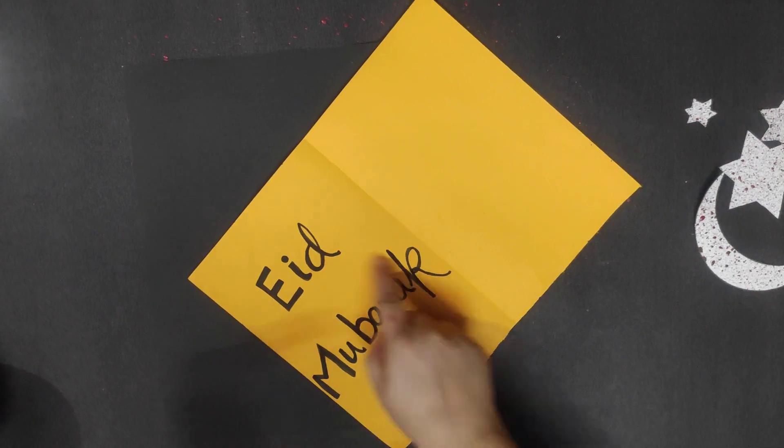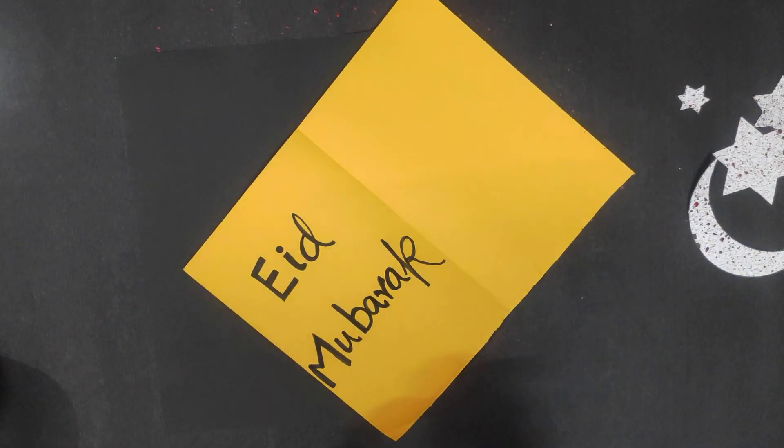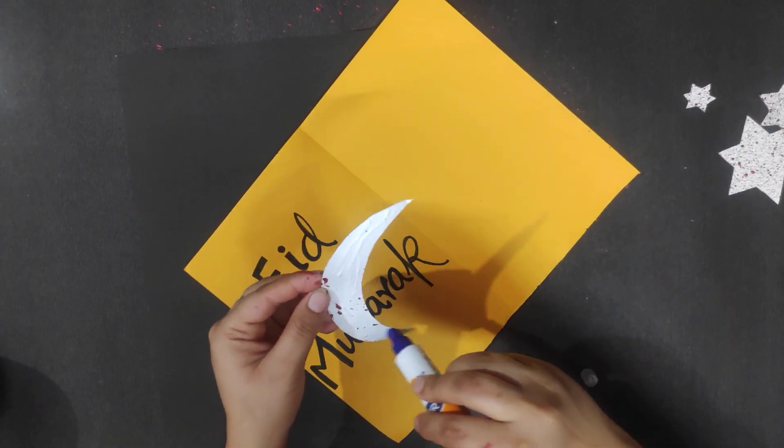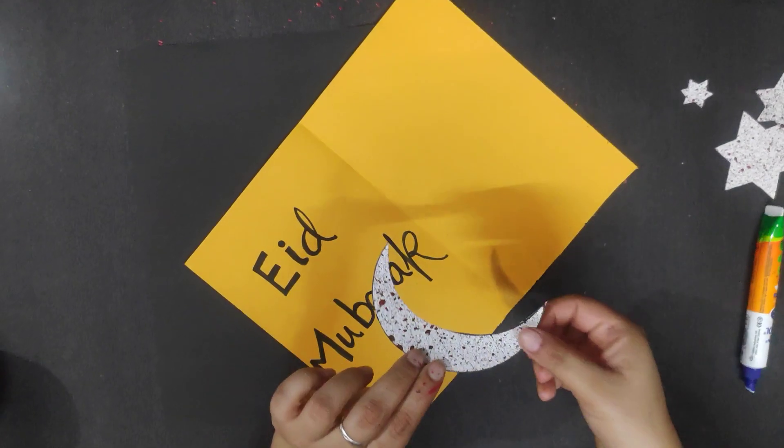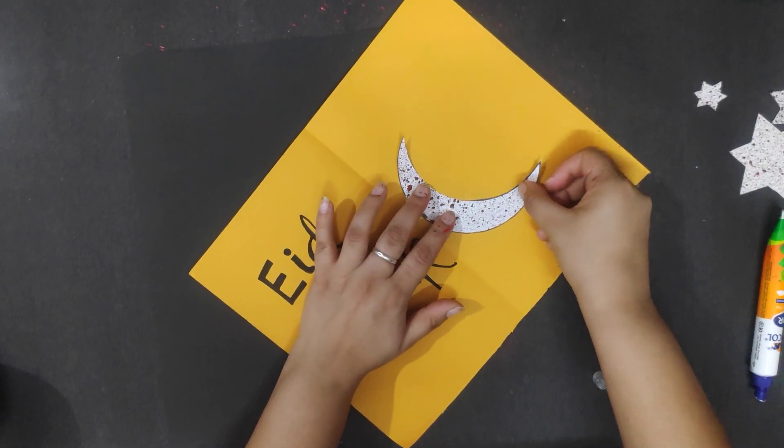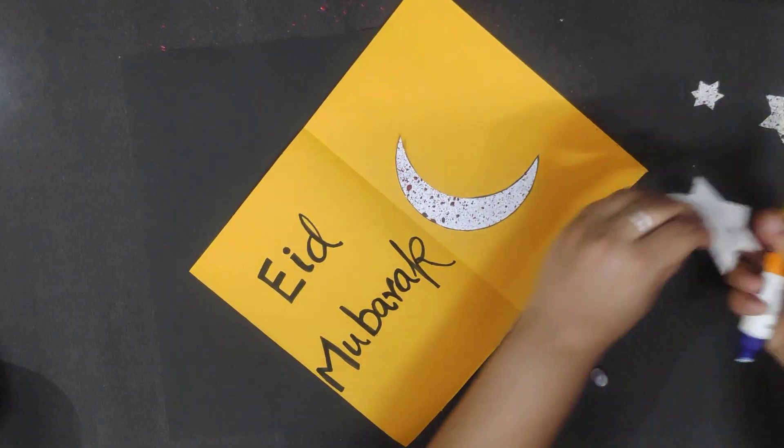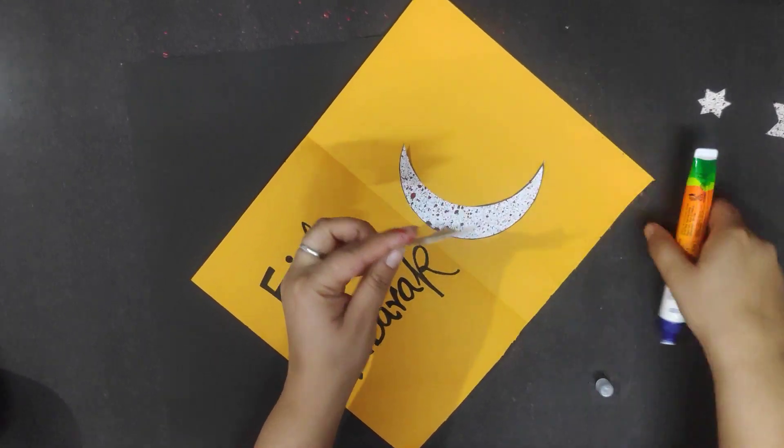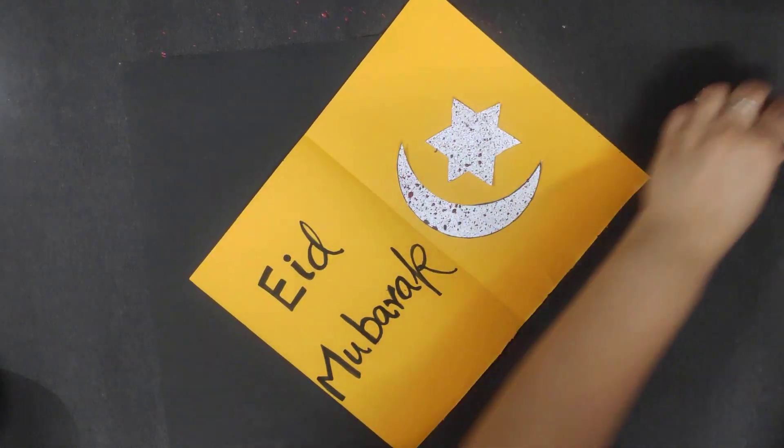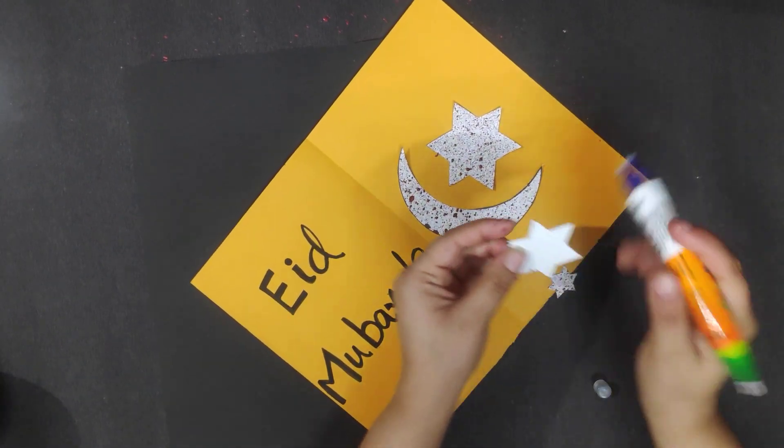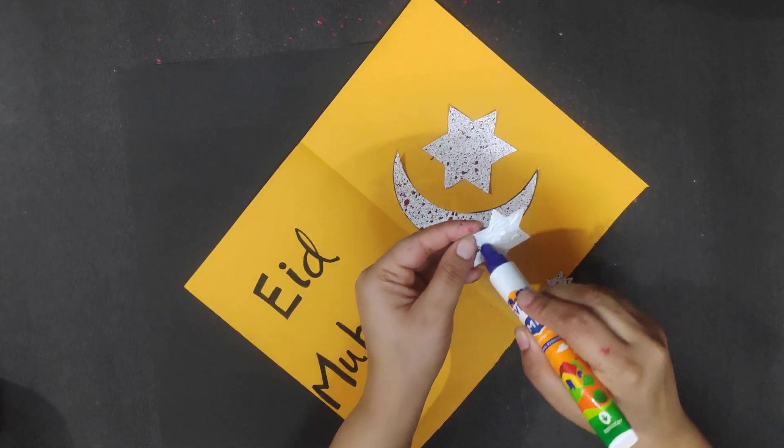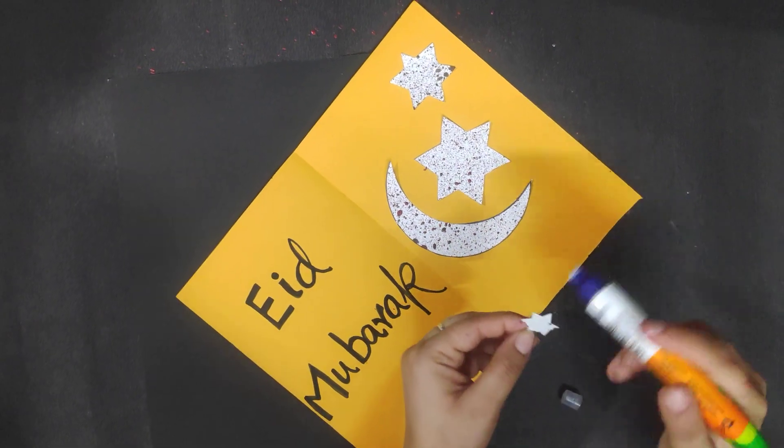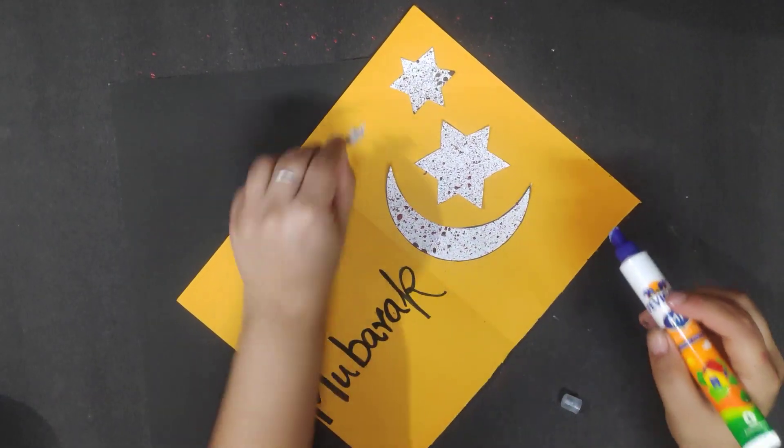After writing Eid Mubarak, we will stick these sprayed moon and stars on the right side of the card. Apply glue and stick it here. We have to stick all of these. The smallest one, stick it here.